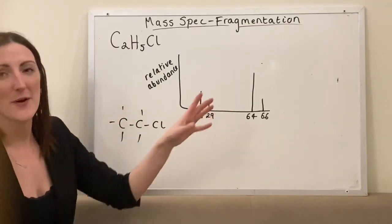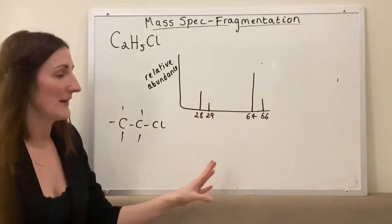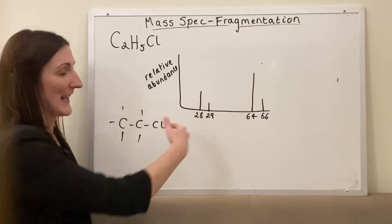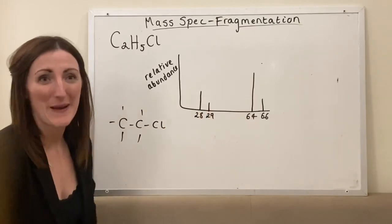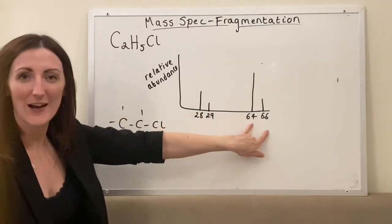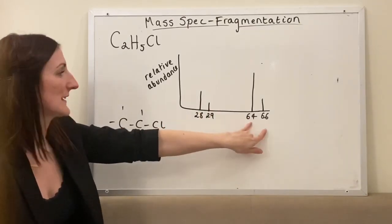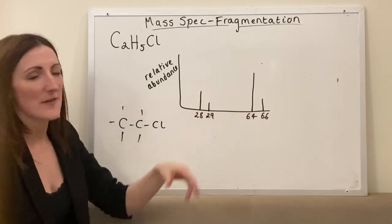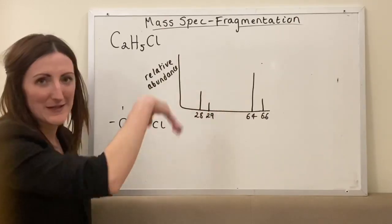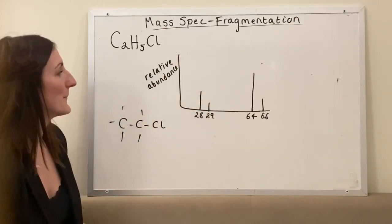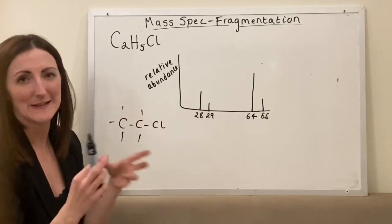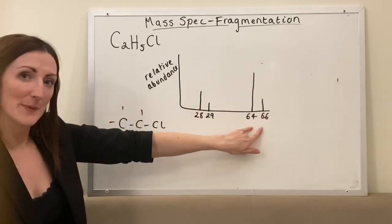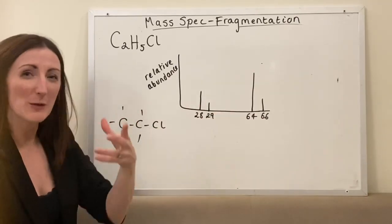From our very simplified, very terribly scaled spectra, we have two molecular ion peaks here at 64 and 66. Just to note, the real mass spec would have extra peaks in it as well, but I've wanted to simplify it. So we've got two molecular ion peaks here and we've got to think why.